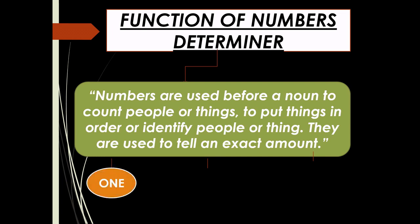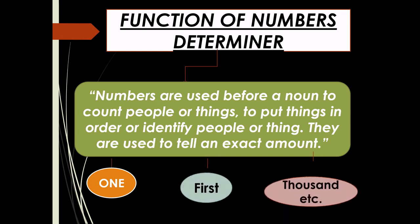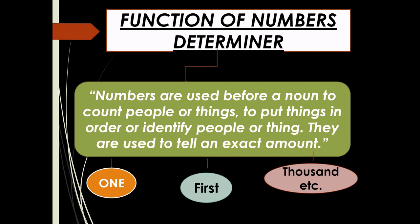Examples of numbers include: 1, 2, 3, 4 — cardinal numbers — and 1st, 2nd, 3rd, 4th — ordinal numbers — as well as 1000, 50, etc. These are all part of number determiners.